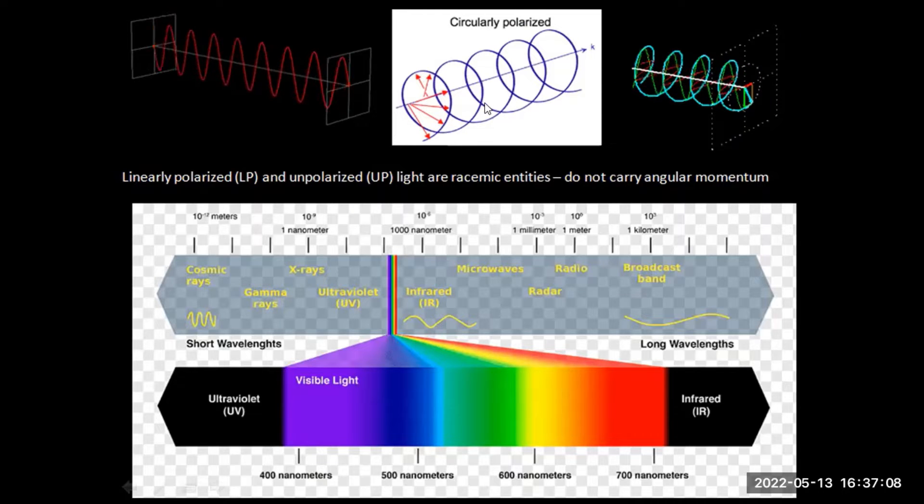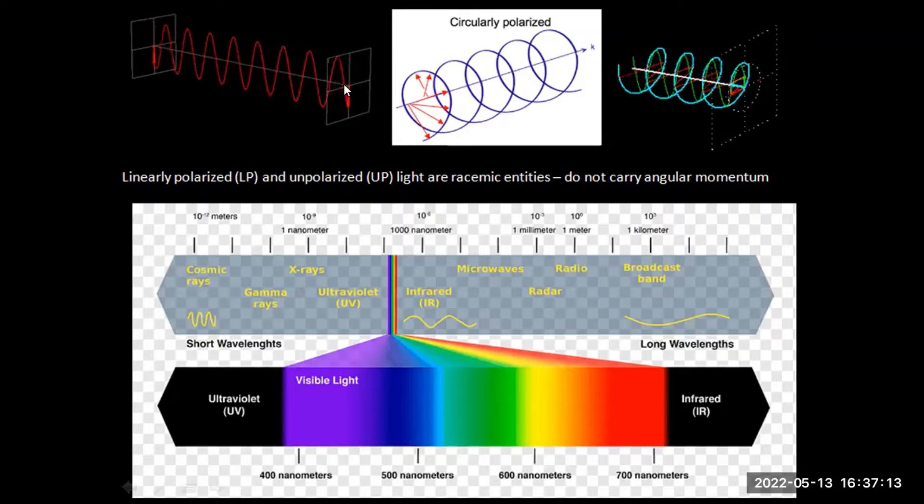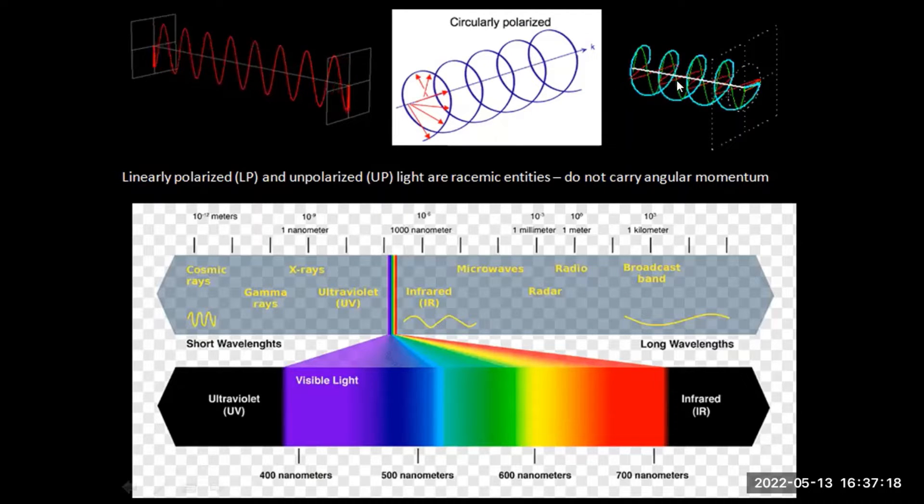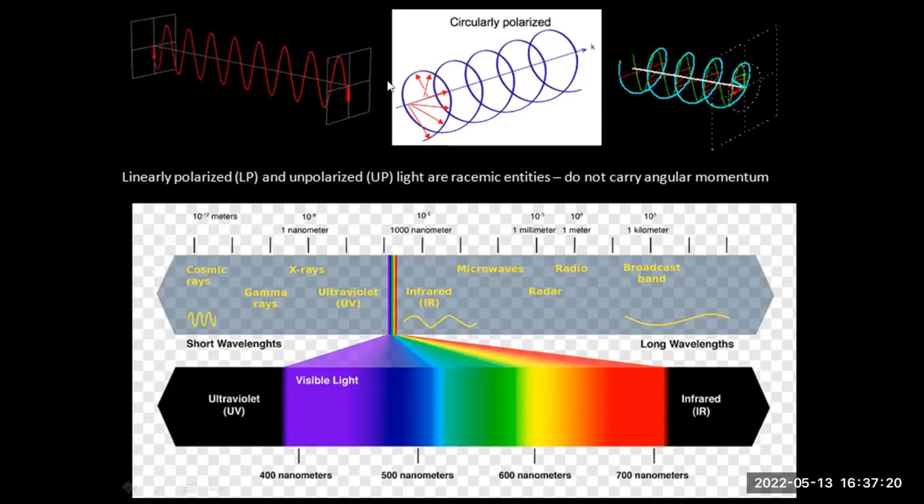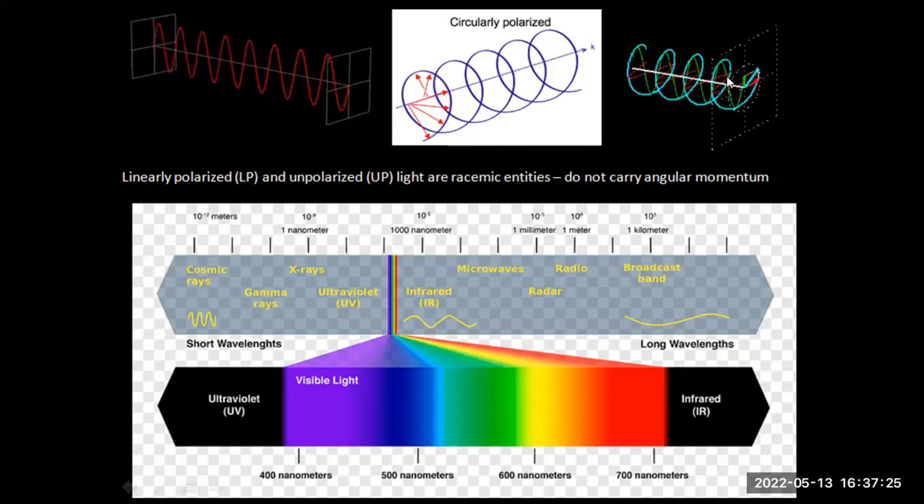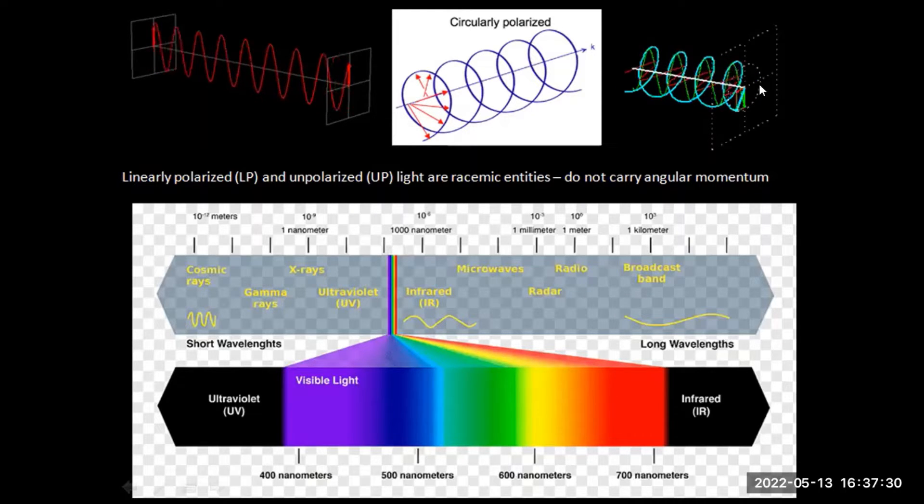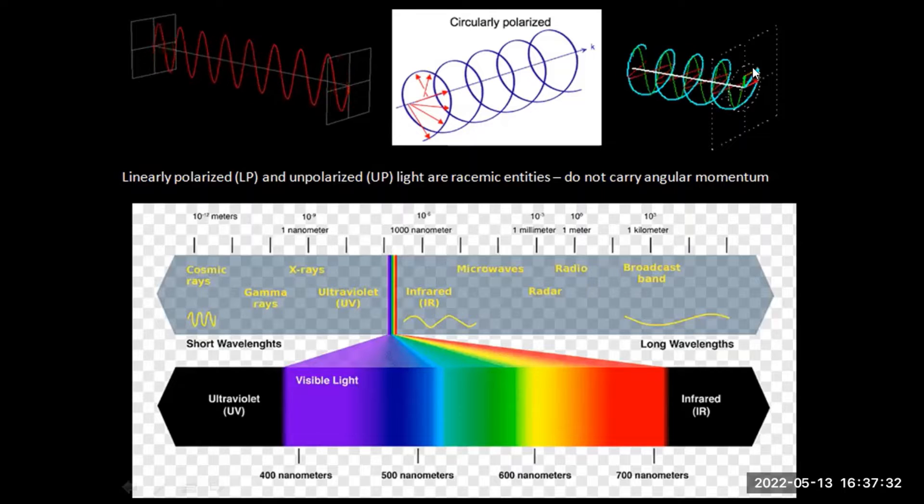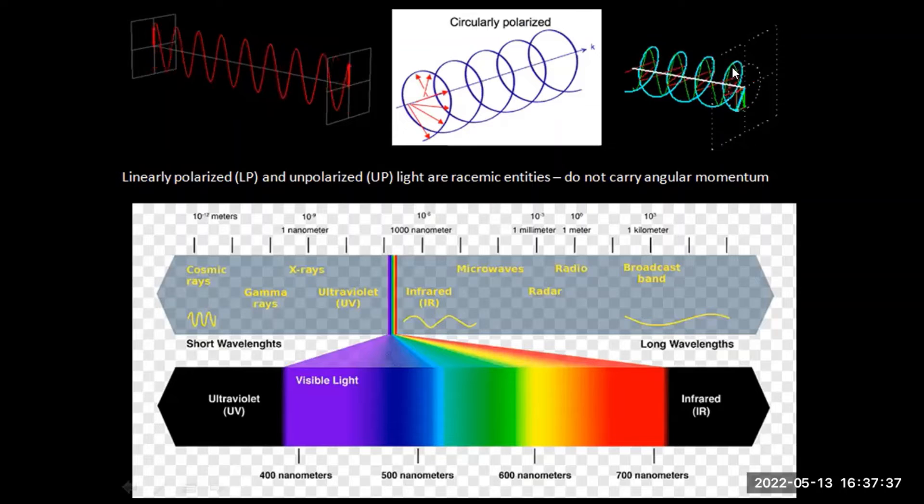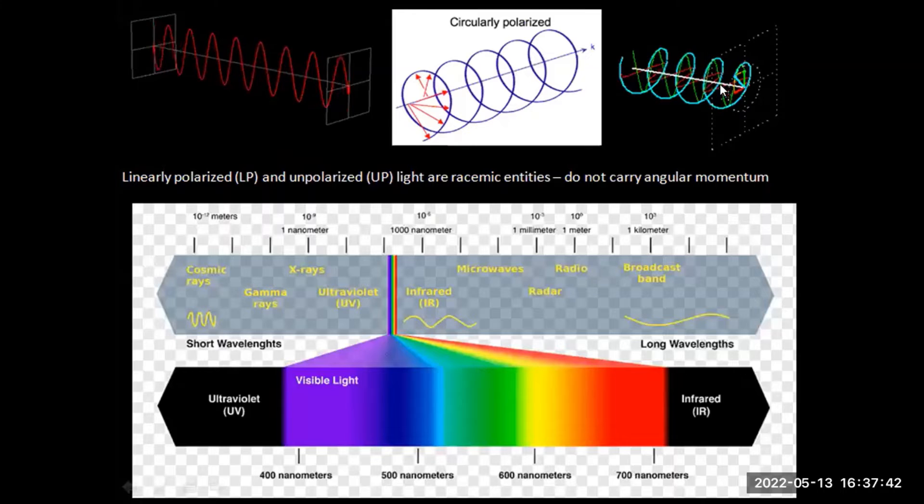Now we can also have circular polarization. When a plane polarized light beam is internally scattered, totally internally scattered from an interface, then we can get circular polarized light. And this is where the amplitudes of these oscillations, they rotate around the direction of motion of the photon or the light beam.